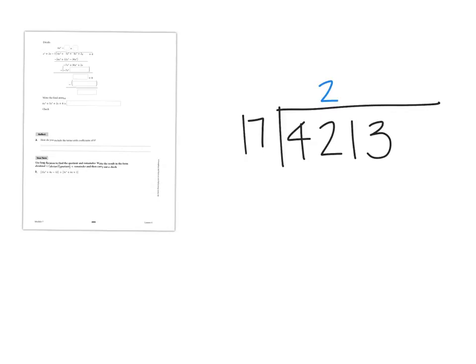Multiply. 2 times 7 is 14, carry the 1. 2 times 1 is 2, plus 1 is 3. And then I subtract. What is 42 minus 34? 8. So now I have that 8 — what do I do? Bring down the 1. And then I need to figure out how many times 17 goes into 81.